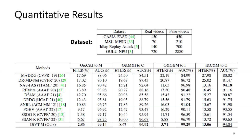We evaluate our method using four public FAS datasets. The top table shows the amount of real and spoof videos utilized in our experiment. We adopted the leave-one-out testing setting, in which the model is trained on three of the datasets and then tested on the remaining dataset. The half total error rate and the area under curve (AUC) are utilized as the evaluation metrics.